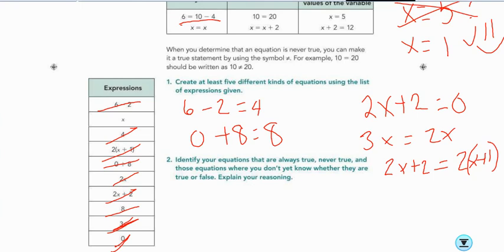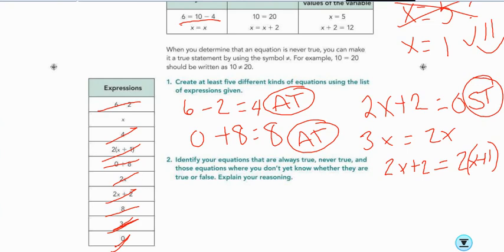So, again, five different types of equations. So, this is true. Always true. 0 plus 8 is always that. Always true. 2x plus 2 could be sometimes 0, if this was like a negative 1. 2 times negative 1 plus 2. So, this is sometimes true. This is sometimes true. And then this is always true. So, I don't have any never true examples.